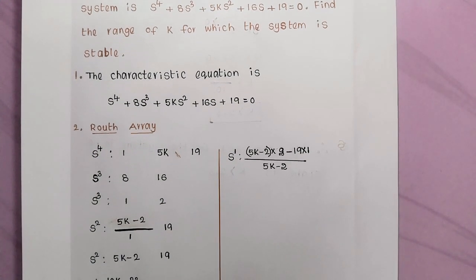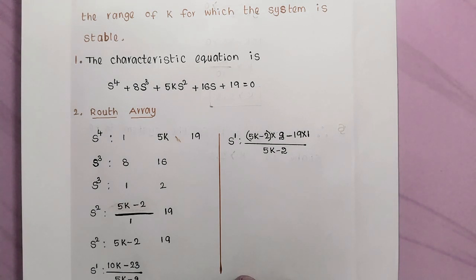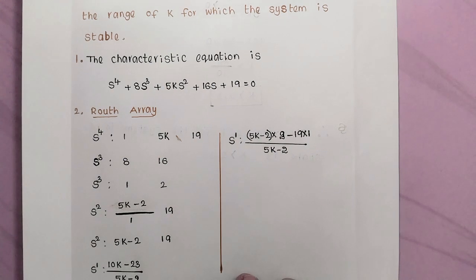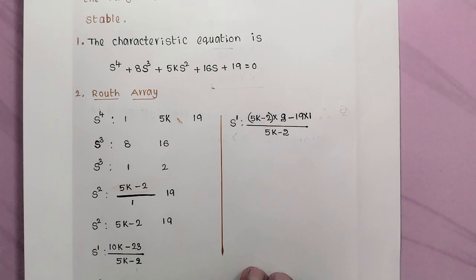Second step: constructing the Routh array. The highest power is 4, so the first row is the s⁴ row. Its elements are the coefficients of s⁴, s², and s⁰, which are 1, 5k, and 19. The second row is the s³ row, with elements being the coefficients of s³ and s¹, which are 8 and 16. We can simplify by dividing by 8, so the s³ row becomes 1 and 2.